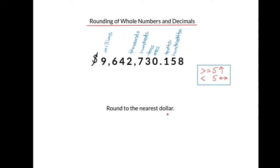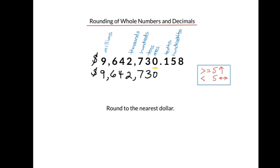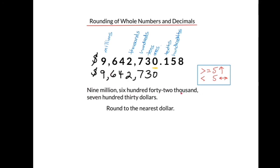Let's try one more example. Let's round to the nearest dollar. Where is the dollars column? That's the ones column. We'll underline the 0 — it's in the ones column. We look to the digit to the right, the 1. It's less than 5, so we leave that ones column as it is. The 0 stays at 0. Everything to the right goes to 0, everything to the left stays the same. Again, the zeros to the right of the decimal can be removed. Here's our number rounded to the nearest dollar: 9,642,730 dollars.